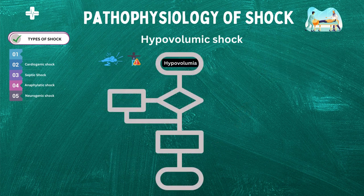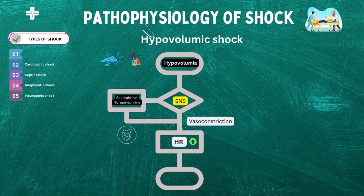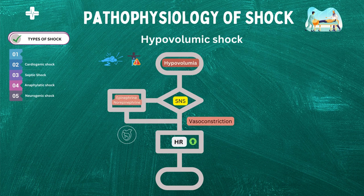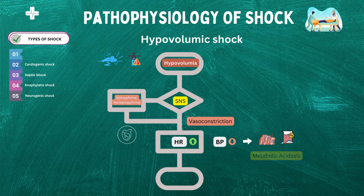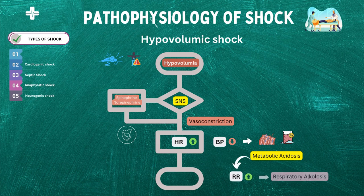The initial response to hypovolemia is the activation of the sympathetic nervous system, which triggers the release of catecholamines such as epinephrine and norepinephrine. These hormones act on the heart and blood vessels, causing an increase in heart rate and vasoconstriction, respectively. The goal of these responses is to maintain blood pressure and perfusion to vital organs, such as the brain and heart. As hypovolemia worsens, the body's compensatory mechanisms become inadequate and blood pressure begins to decline, leading to decreased tissue perfusion, cellular hypoxia, and metabolic acidosis. In an attempt to correct the acidosis, the body increases its respiratory rate, which can lead to hyperventilation and respiratory alkalosis.